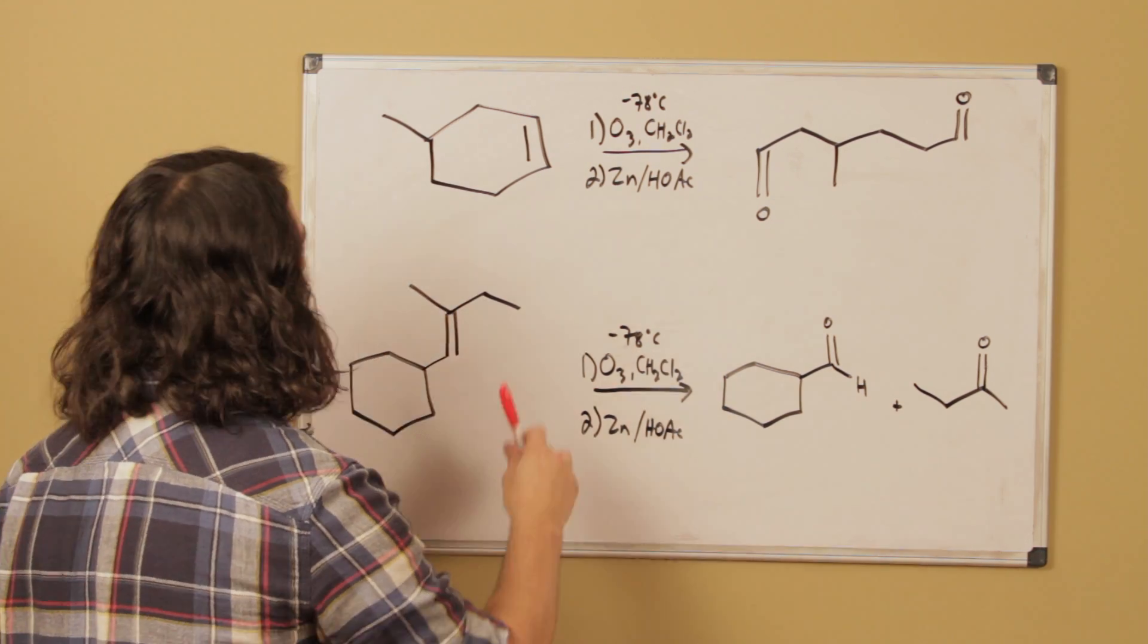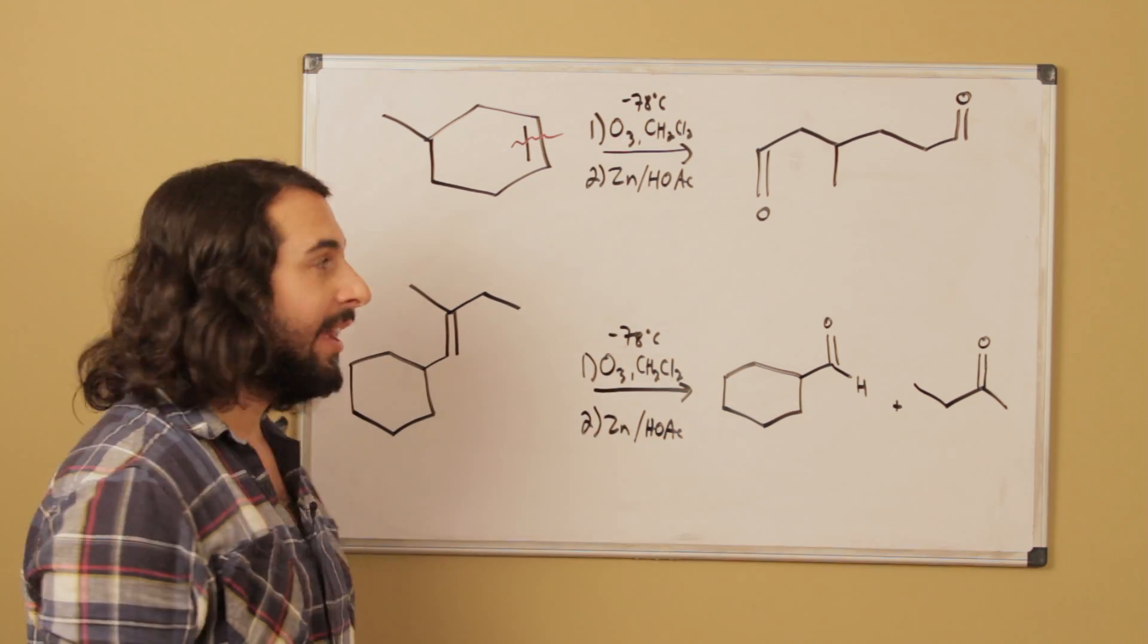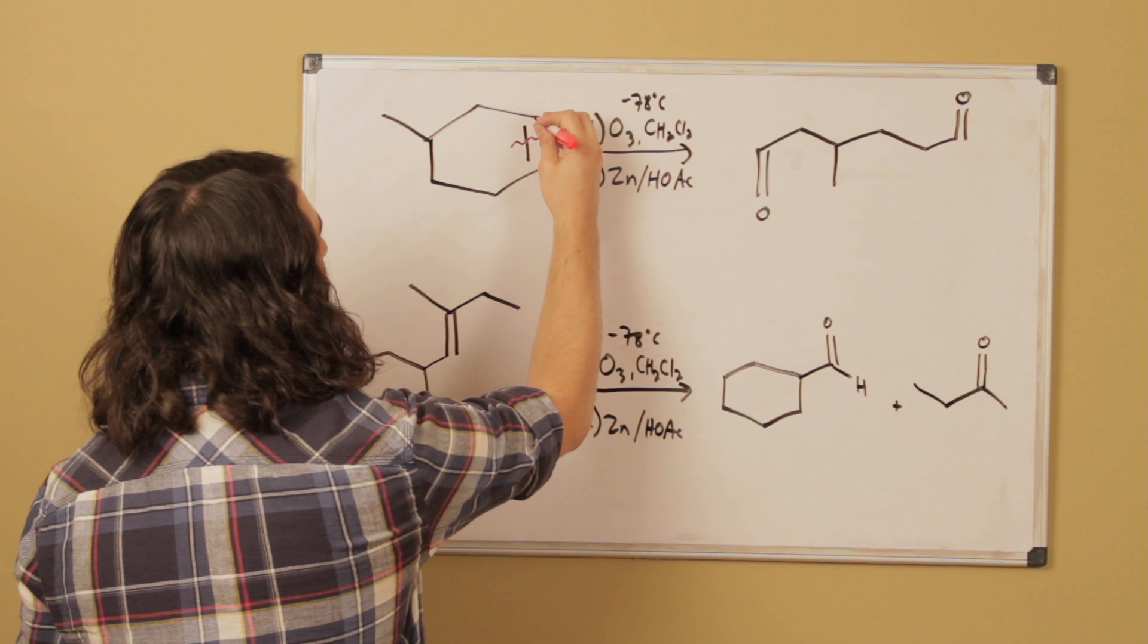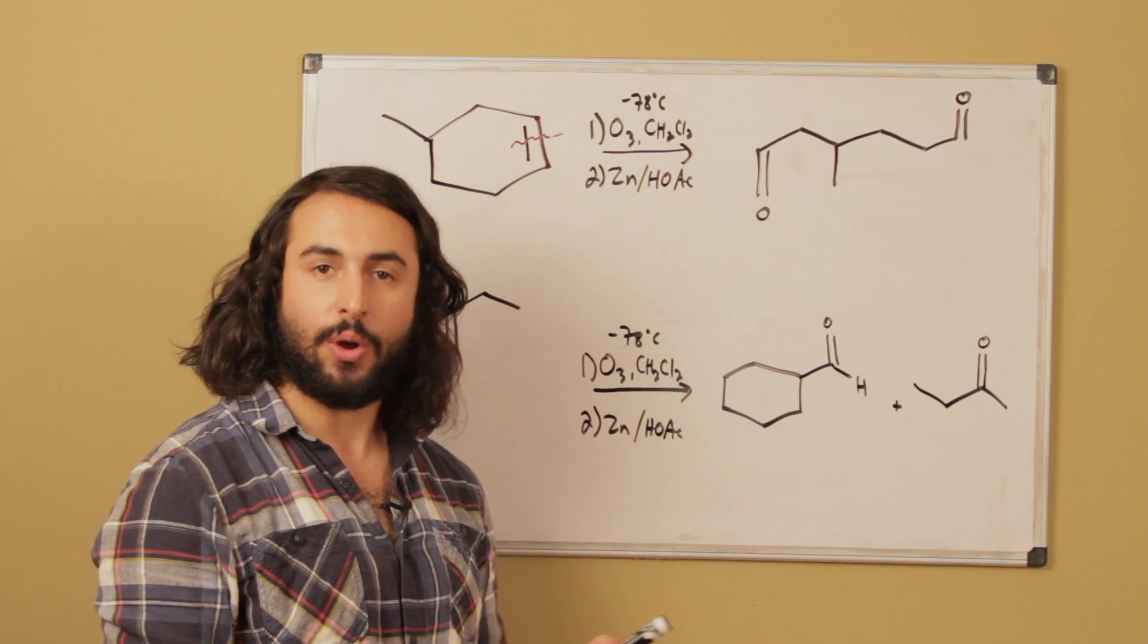In this case we've only got one of them, so we are going to cleave that double bond. We're going to pull it apart and each carbon that was participating in the double bond will now be a carbonyl carbon. That is what ozonolysis does.